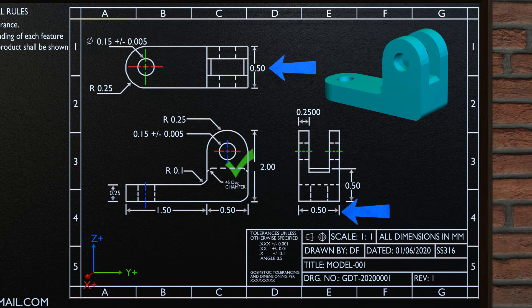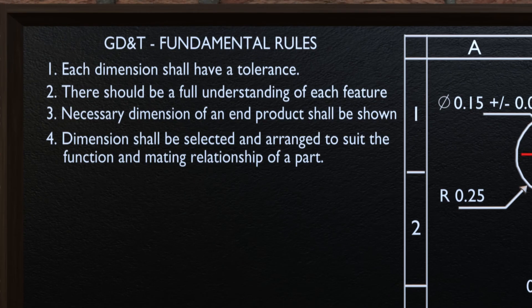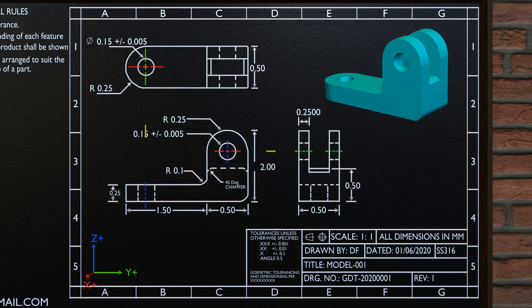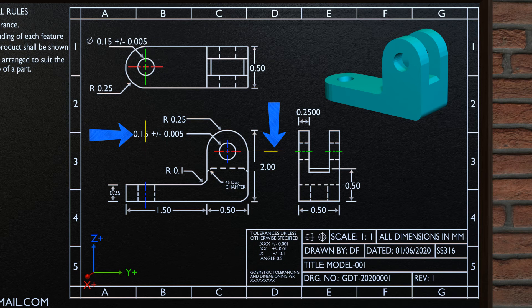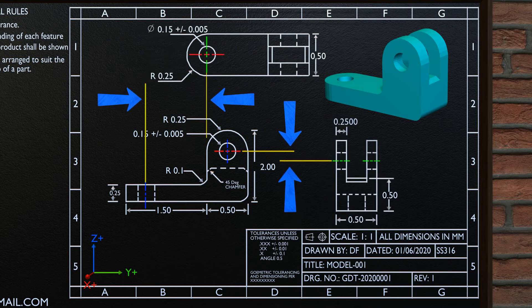When we look at both these dimensions, they represent the same feature, which means there are more dimensions than necessary, which is not a good practice. As per the fourth fundamental rule, dimensions shall be selected and arranged to suit the function and mating relationship of a part. The dimensions in this drawing are arranged to suit the function and mating relationship. One way of checking this is by coinciding the axis of features from one view of the part to the next. But if we move the front view and the top view from their place, then it is not satisfying a mating relationship, hence this is not a good practice as per the fourth fundamental rule.